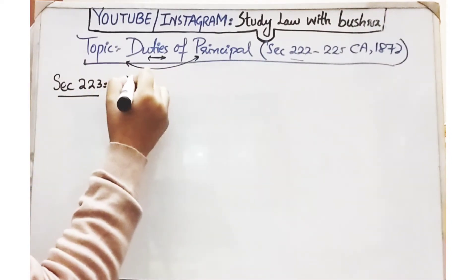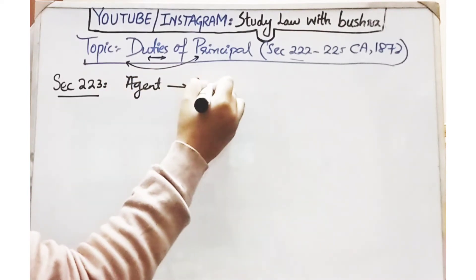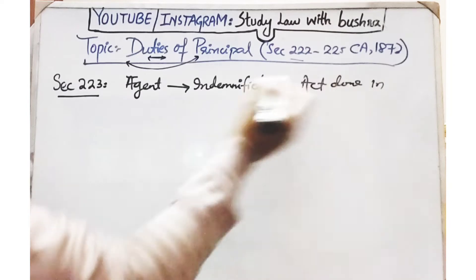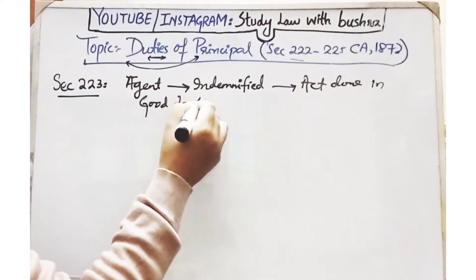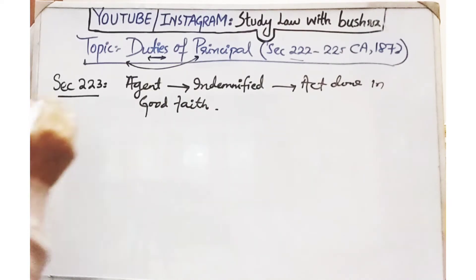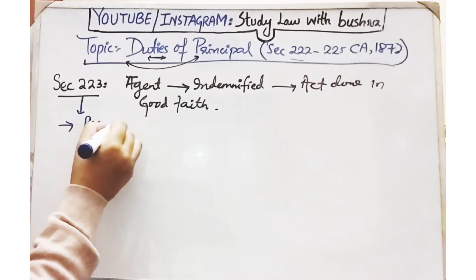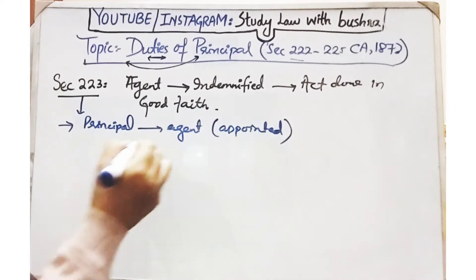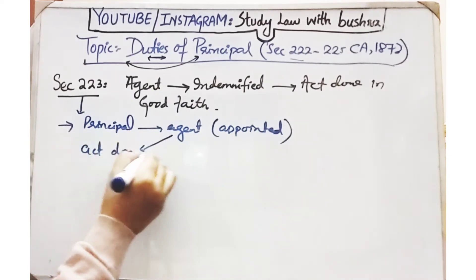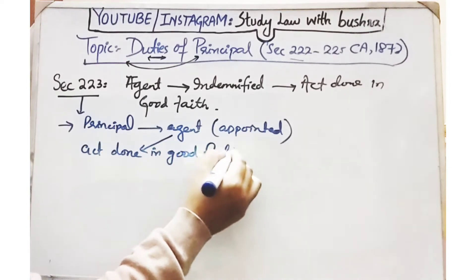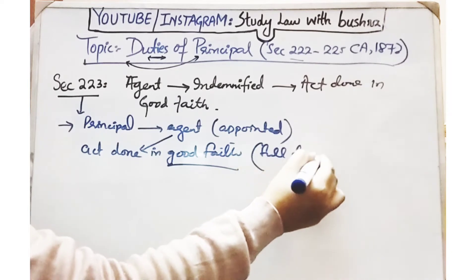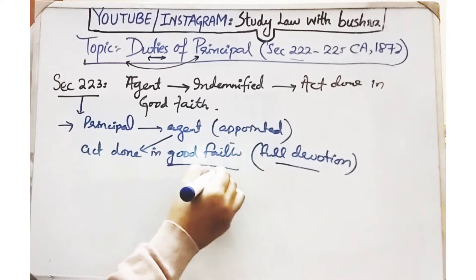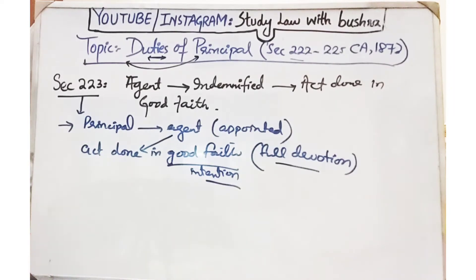Next is Section 223, which states: agent to be indemnified against the consequences of any act done in good faith. There is a new word here — 'good faith' — which means with good intention. Section 223 says that when a principal employs his agent and appoints him to perform any act, the agent performs that act in good faith — with good intention, full devotion, and full care — so that his principal does not suffer any kind of loss.